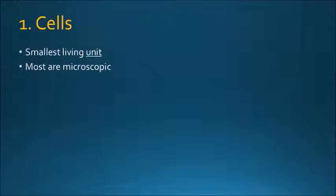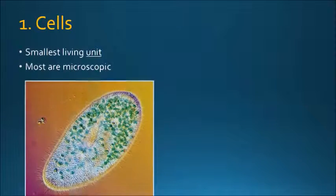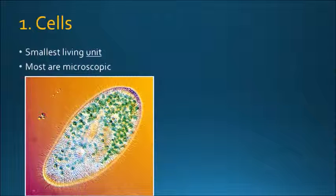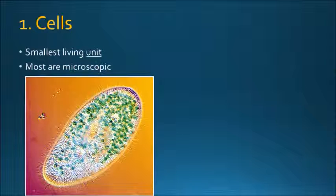Basically, cells are the smallest living units. They're not the smallest living things, but the smallest living units. Most of them are microscopic. For example, if you talk about animals, that's a single-celled animal — a type of amoeba. So it's a single cell, a very, very small living unit.